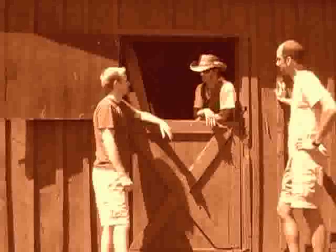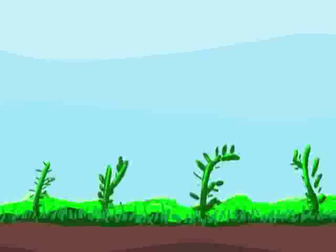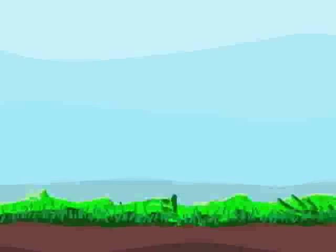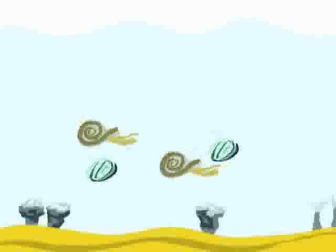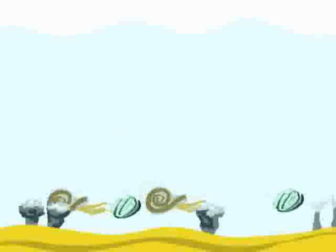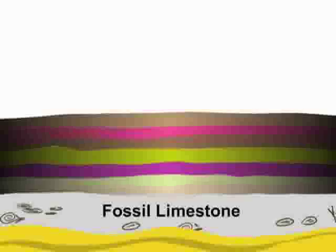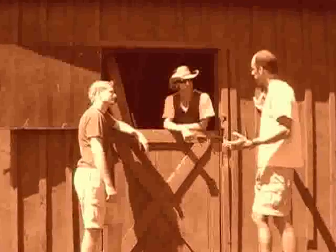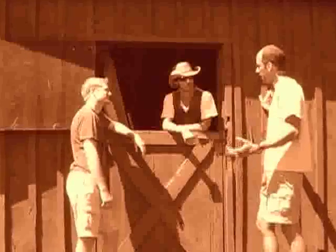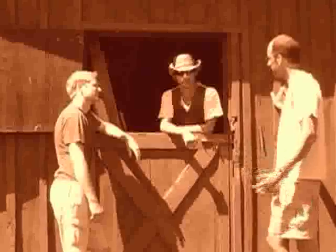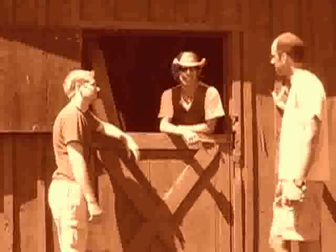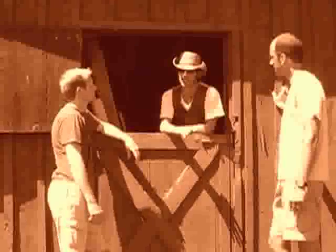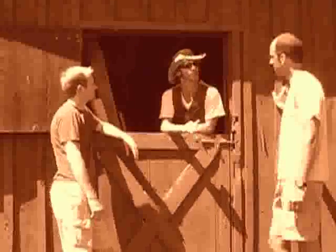Bioclastic rocks are formed differently. Coal forms when ancient plants are buried, broken down, and compressed. Fossil limestone forms when shells of ancient sea organisms are buried and cemented together. So coal is really plants, and fossil limestone is just shells. Just like the plants that make it, coal burns.